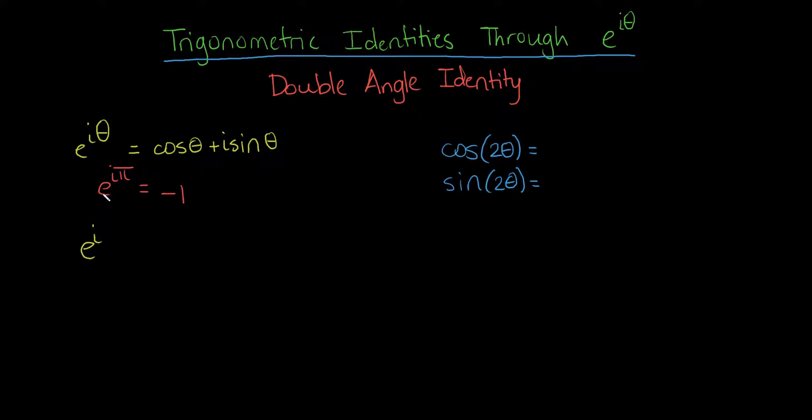e to the i, well, we're trying to find 2 theta, so what if we just plug in 2 theta? Well, what we'll get is the cosine of 2 theta plus the i sine of 2 theta.